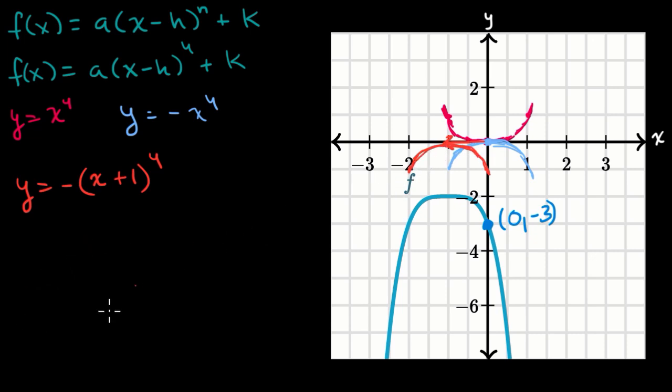And then last but not least, if we're going to shift that down by two to get to our f(x), we just need to subtract two here. Our k would be negative two. So we would get f(x) = -(x + 1)^4 - 2.